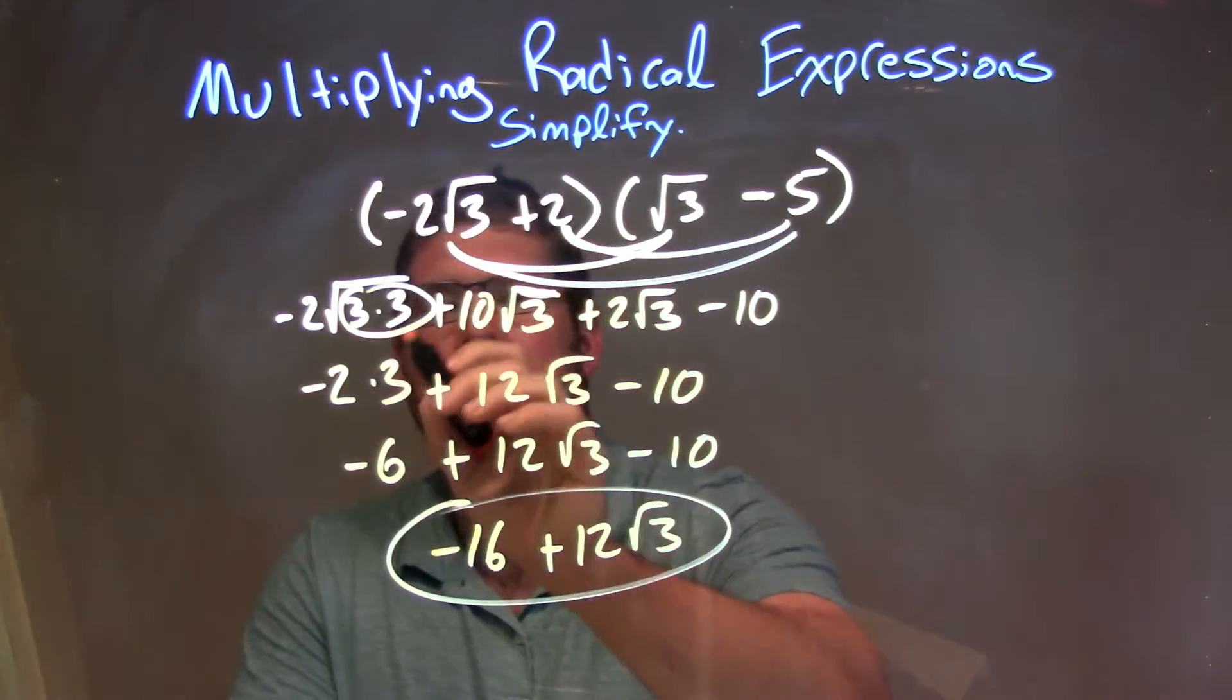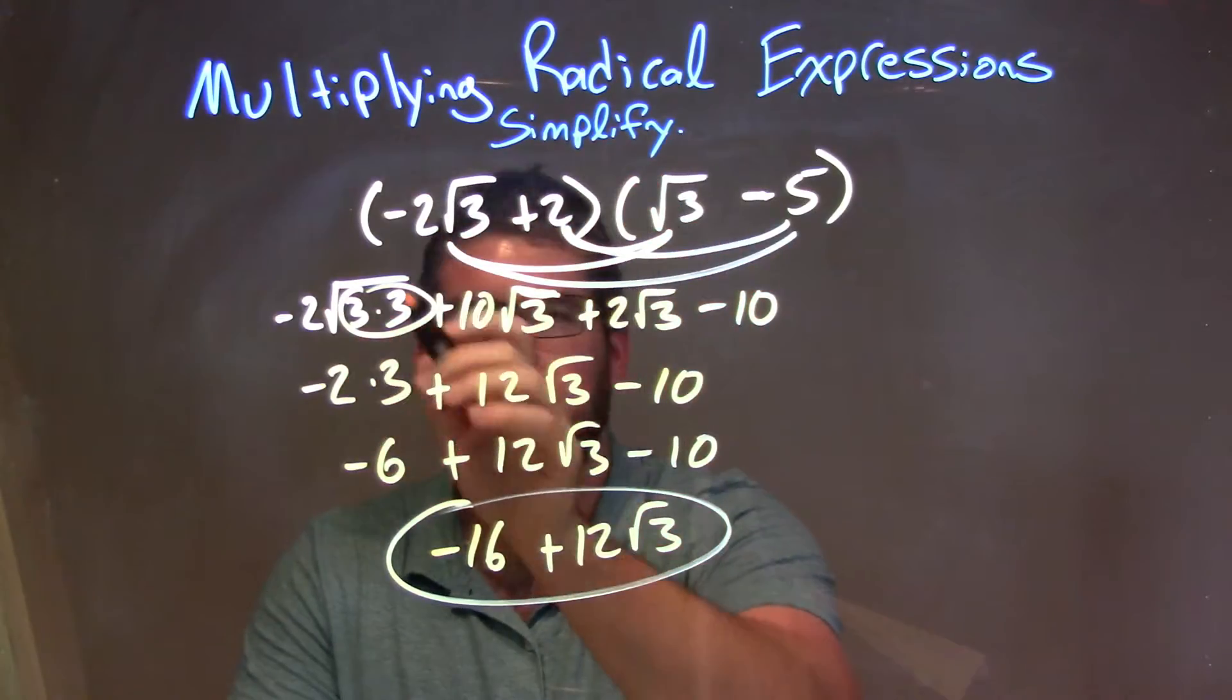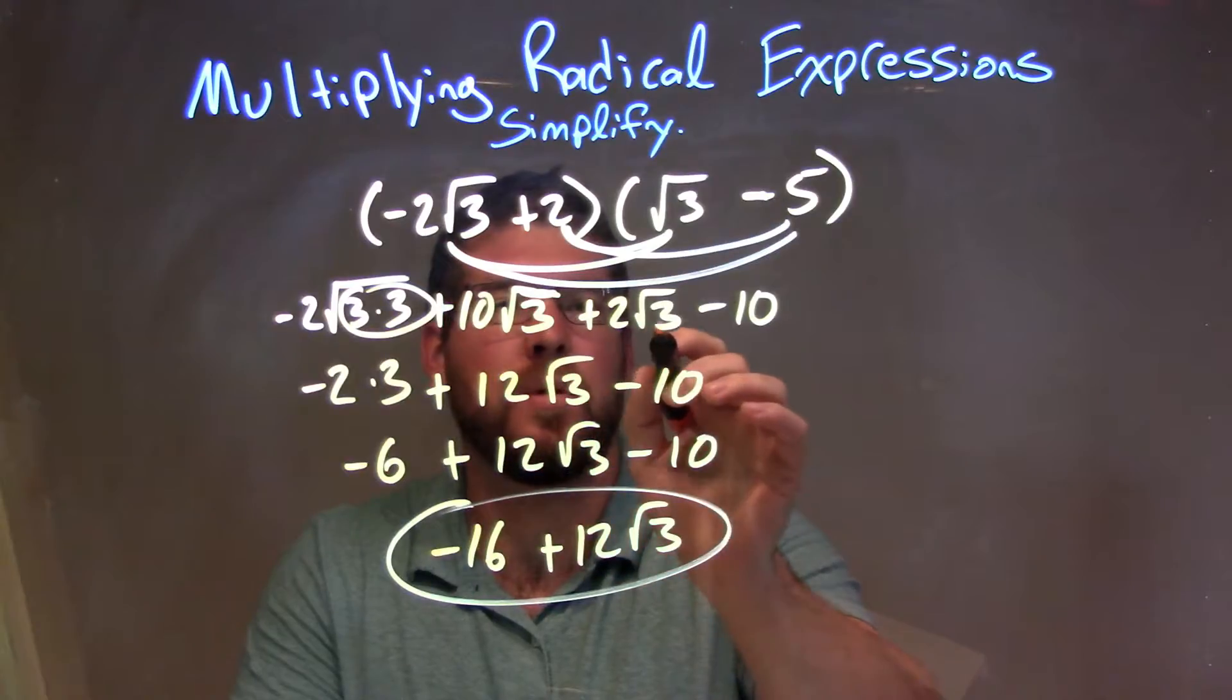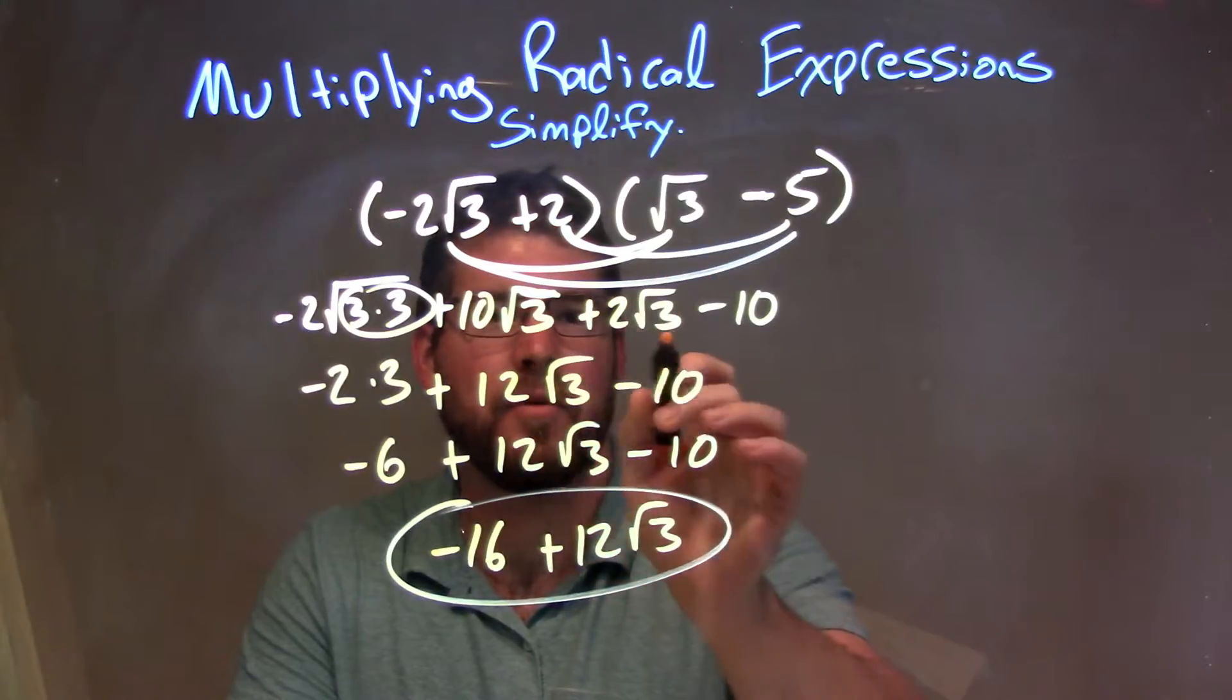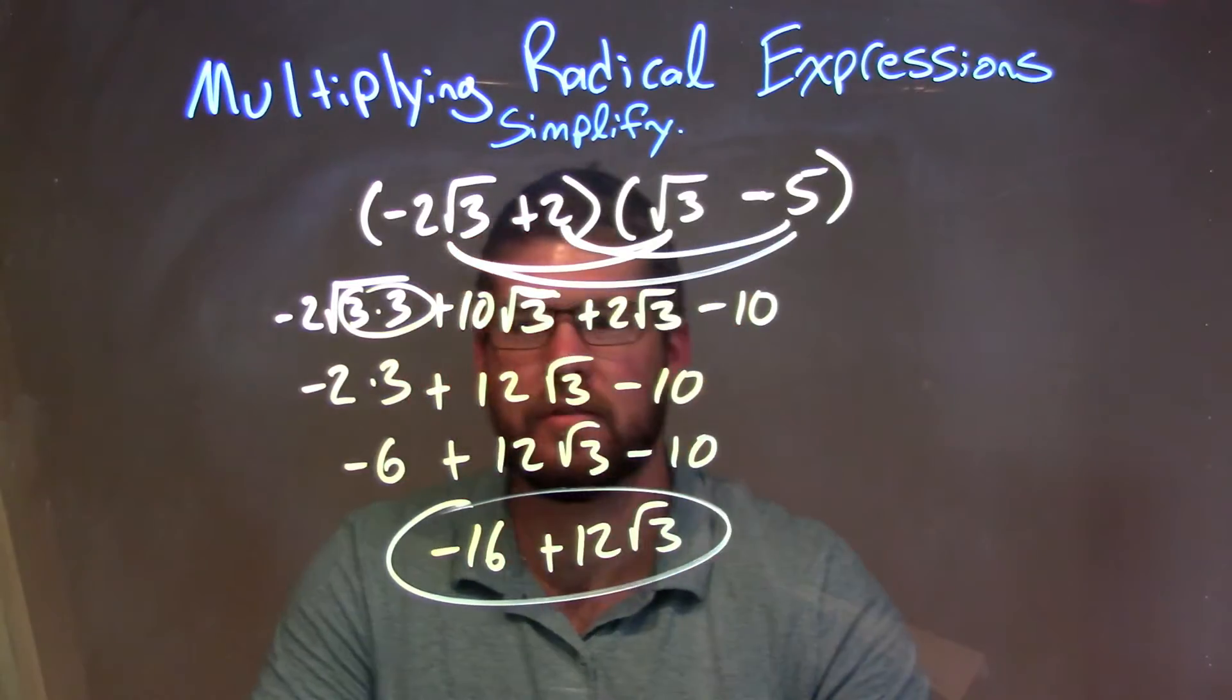We simplified. Simplified this square root of 3 times 3 is just 3. 3 times 3 is about 9. We can see a pair there. We can combine the 10 square root of 3 plus 2 square root of 3 because they're the same square root of 3, to look to the number in front of them to be 12 square root of 3, and then the minus 10 is just there.